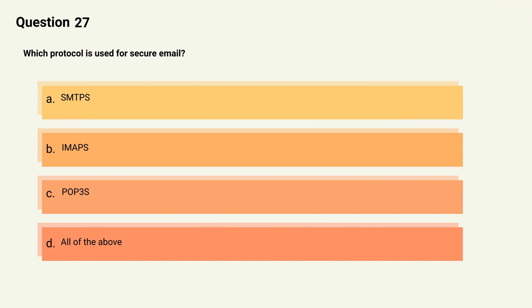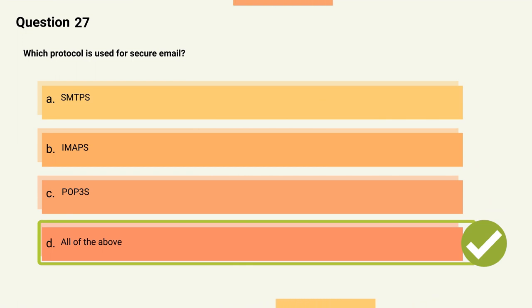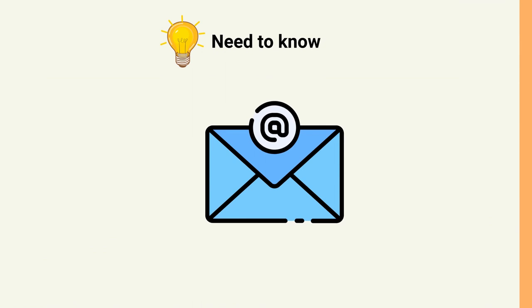Question 27: Which protocol is used for secure email? Options: A) SMTPS, B) IMAPS, C) POP3S, D) All of the above. The correct answer is Option D, all of the above. Explanation: Secure email can be achieved using SMTPS, IMAPS, or POP3S protocols, which encrypt email traffic to provide security for sensitive information.